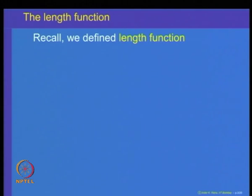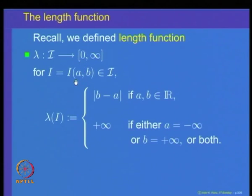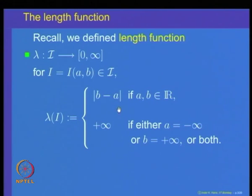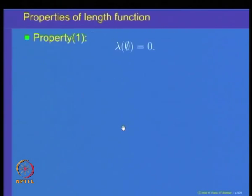Let us recall the properties of the length function that we have already proved. The length function was defined on the class of all intervals. For an interval with end points A and B, its length lambda of I is defined as the absolute value of B minus A if A and B are real numbers, and in case either is plus infinity or minus infinity, the length is defined to be equal to infinity.